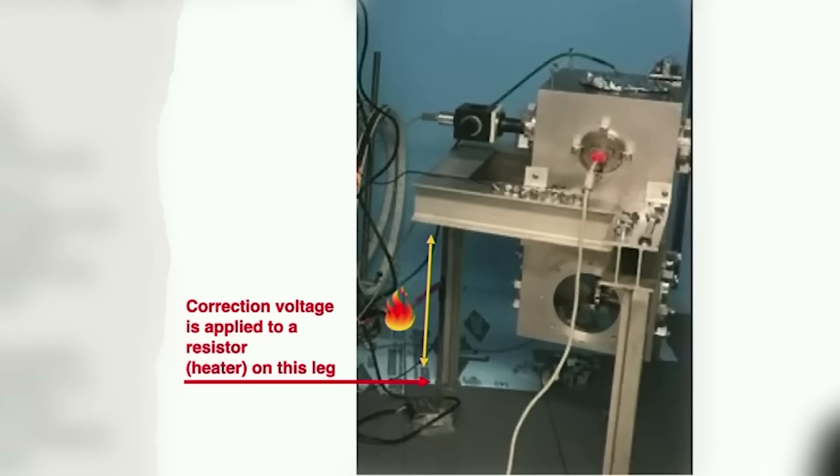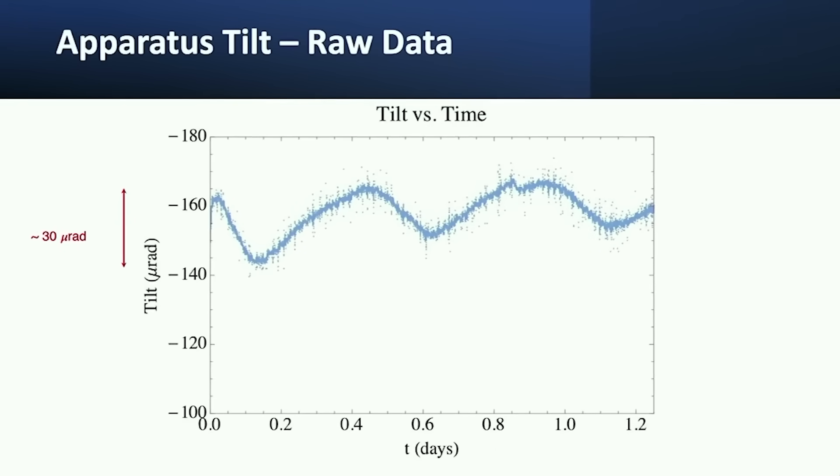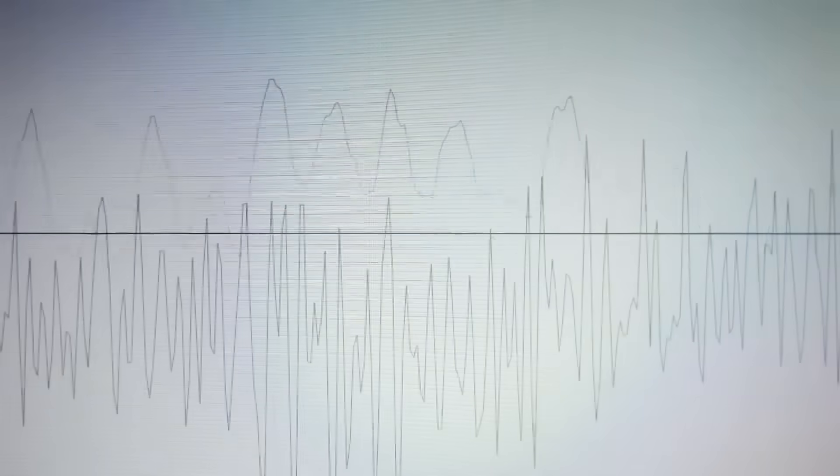They can measure this as they have here, and they can see the tiny—this is millionths of a radian. Radians are about 57 degrees, so you're measuring 57 millionths of a degree tilt and you're doing that with very high accuracy over many day-long experimental data acquisition periods.